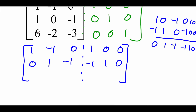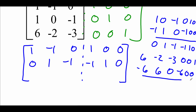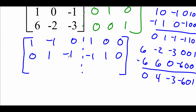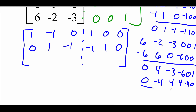Now for the last row we need to get rid of the 6 and the negative 2. Starting with 6, negative 2, negative 3, 0, 0, 1. Taking the top row times negative 6 gives negative 6, 6, 0, negative 6, 0, 0. Adding those together we get 0, 4, negative 3, negative 6, 0, 1. Now we need to get rid of that 4 in the second column without putting a number back in the first column, so we use our new middle row times negative 4: 0, negative 4, positive 4, positive 4, negative 4, 0. Adding those together gives 0, 0, 1, negative 2, negative 4, 1. We fill that into our bottom row.